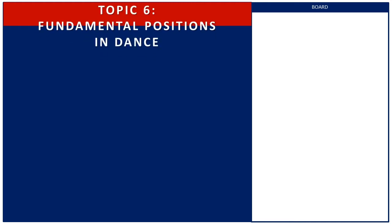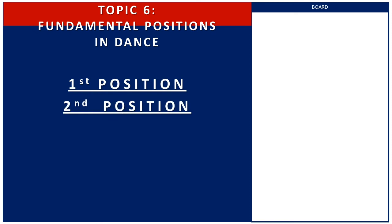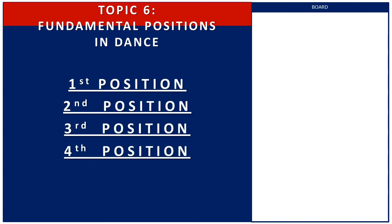For Topic 6, it is about the fundamental positions in dance. There are 5 fundamental or basic positions in dance that are commonly termed as 1st position, 2nd position, 3rd position, 4th position, and 5th position of the feet and arms.